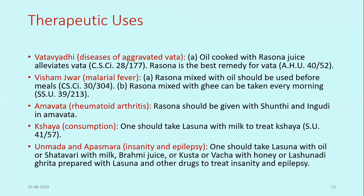Regarding therapeutic uses, it is mainly used in Vata Vyadi. Oil cooked with Rasuna juice is used for elevated Vata. Rasuna is the best remedy for Vata as per Bhavaprakash Nighantu. For Vishama Jvara, Rasuna mixed with oil should be used before milk, or Rasuna mixed with ghee can be taken every morning. For Amavata (rheumatoid arthritis), Rasuna should be given with Shunthi and Eranda. For Kshaya (consumption), one should take Lashuna with milk. For psychological diseases like Unmada (insanity) and Apasmara (epilepsy), one should take Lashuna with oil or Shatavari with milk, Brahmi juice, or Kushtha or Vacha with honey, or Lasunadi Ghrita.